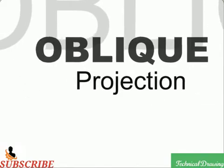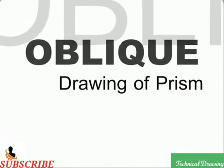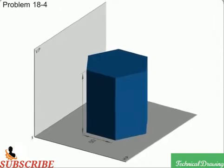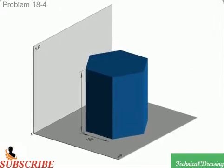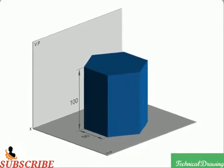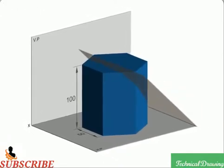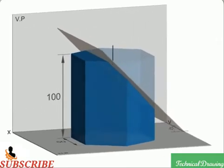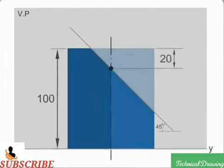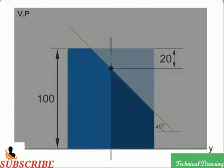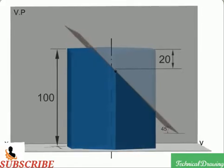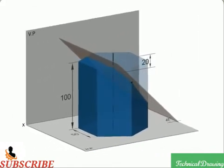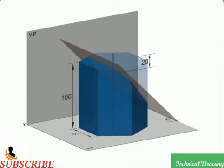Oblique projection. Oblique drawing of a hexagonal prism with a base side of 50mm and axis 100mm long, resting on its base on the HP. It is cut by a section plane perpendicular to the VP and making an angle of 45 degrees with the HP. It passes through a point on the axis 20mm from its top. Draw the oblique projection of the prism by the cavalier method with the receding axis inclined at 45 degrees with the horizontal.